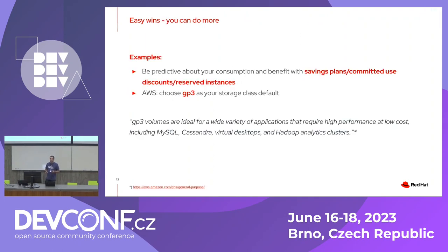You can do more easy wins. First, benefit from savings plans, committed use discounts in the case of GCP, and reserved instances in the case of AWS. For AWS, you can also choose GP3 as your default storage device — it's a very general volume that should be ideal for most applications.